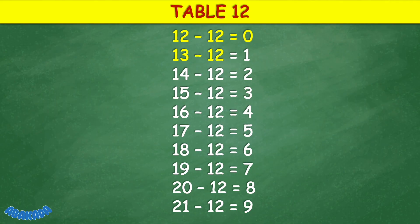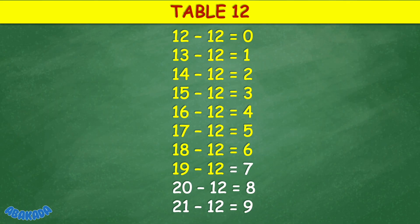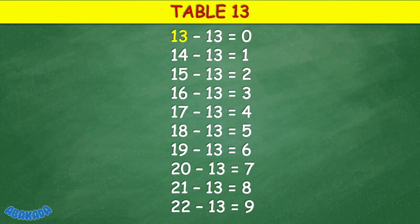Table 12: 12 minus 12 equals 0, 13 minus 12 equals 1, 14 minus 12 equals 2, 15 minus 12 equals 2, 15 minus 12 equals 3, 16 minus 12 equals 4, 17 minus 12 equals 5, 18 minus 12 equals 8, 21 minus 12 equals 8, 21 minus 12 equals 9.